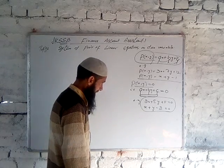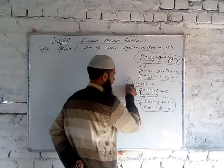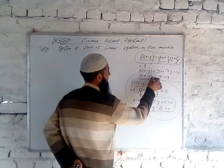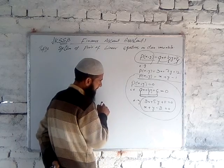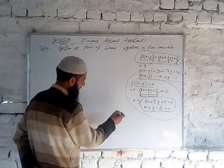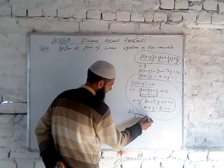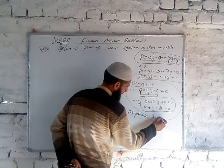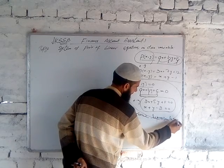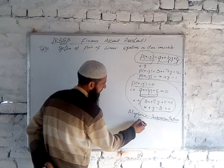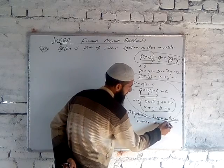There are two representations of a linear equation. The first is called the algebraic representation — the equation ax + by + c = 0 is the algebraic representation of a linear equation in two variables.